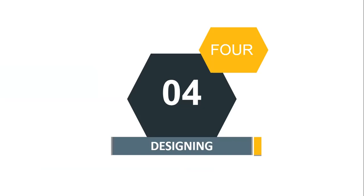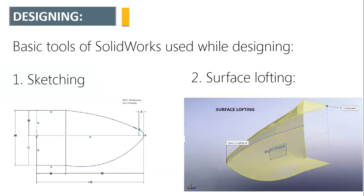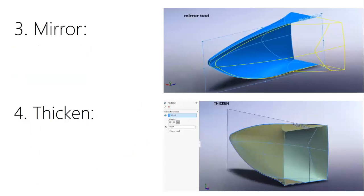The designing part involved four basic steps in SolidWorks. First is sketching — creating a 2D sketch of the nose cone using its dimensions. Second is surface lofting — providing surfaces to the lines created in the sketch. Third is mirroring — after creating the half model in surface lofting, it is mirrored to create the complete nose cone. Fourth is thickening — adding thickness to parts of the nose cone.